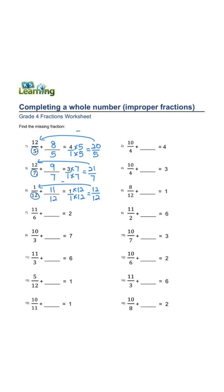2 over 1, denominator is 6. 2 times 6, 1 times 6 equals 12 over 6. 12 minus 11 is 1 over 6. 7 over 1,